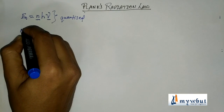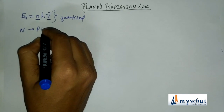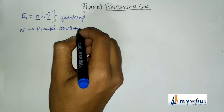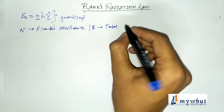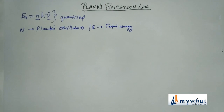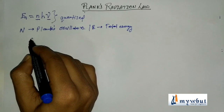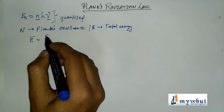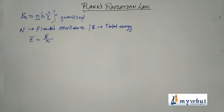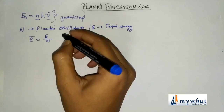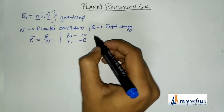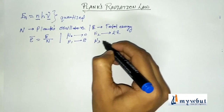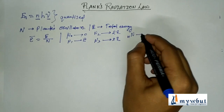Let N be the total number of Planck's oscillators and E (capital) be the total energy of all of them. The energy per oscillator, denoted ε̄, equals total energy divided by number of oscillators. If N₀, N₁, N₂, etc. are the number of oscillators with energies 0·ε, 1·ε, 2·ε, ..., then N_R is the number with energy R·ε. So N = N₀ + N₁ + N₂ + ... + N_R.